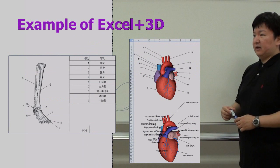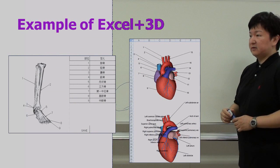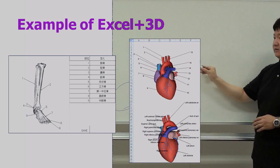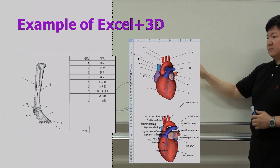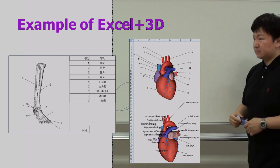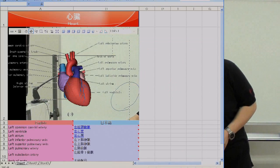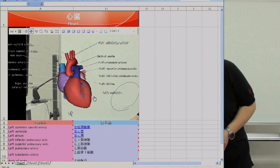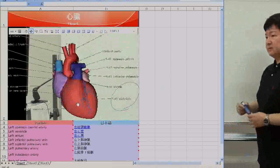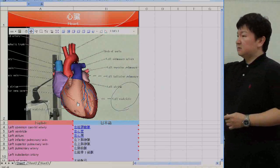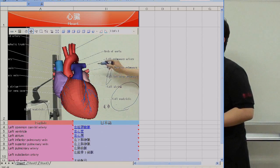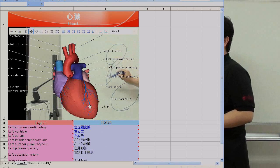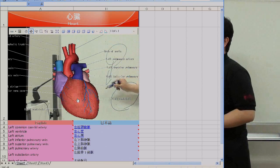This is an example of Excel plus 3D XBL-5. The medical model can be embedded into an Excel file like this. You can rotate, zoom in and out freely. This is very unique. This is a demonstration video — the heart is beating. 3D animation can be seen like this, and beating animation can be added to the model.